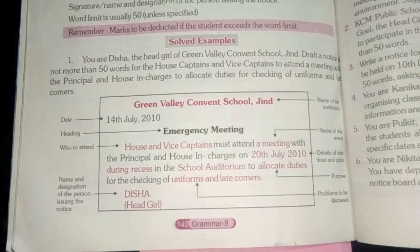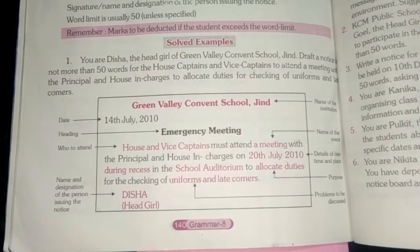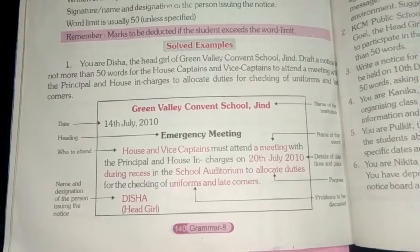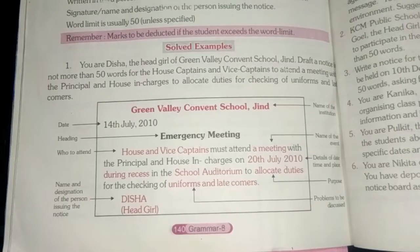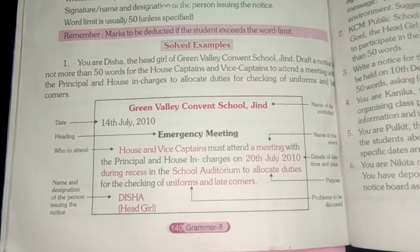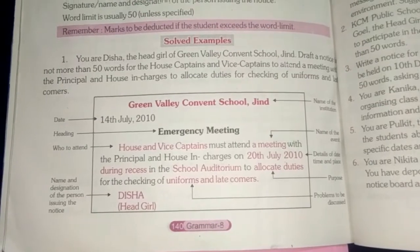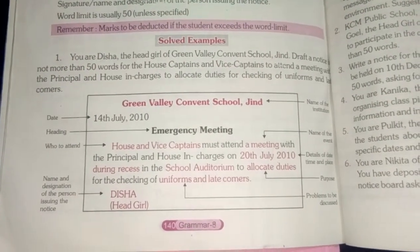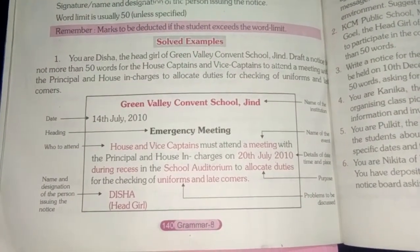The purpose of the meeting is to allocate duties for checking of uniforms and latecomers. So you are Disha, the head girl of your school — Green Valley Convent School, Jind. You cannot use more than 50 words, and you have to draft a notice for house captains and vice captains.